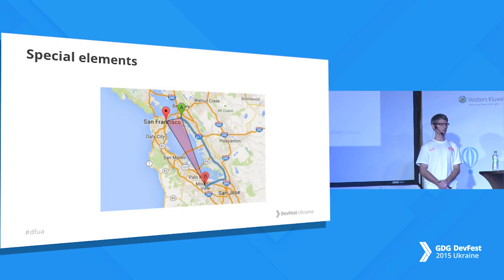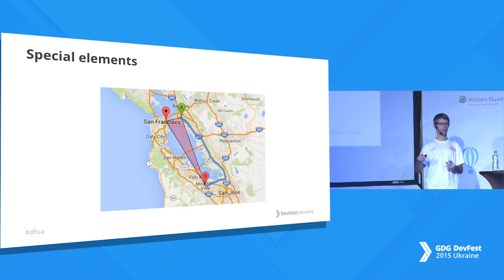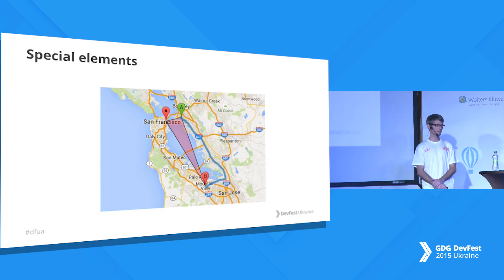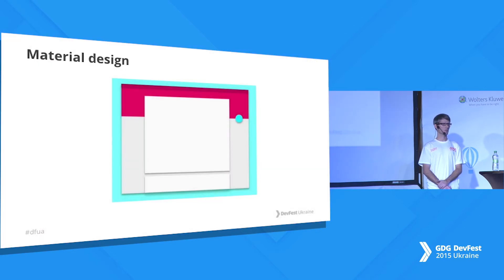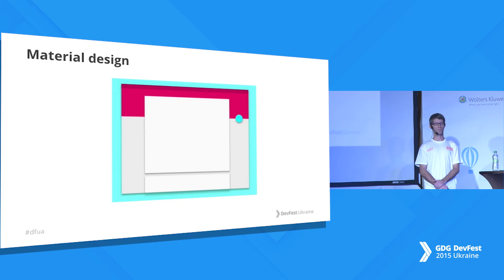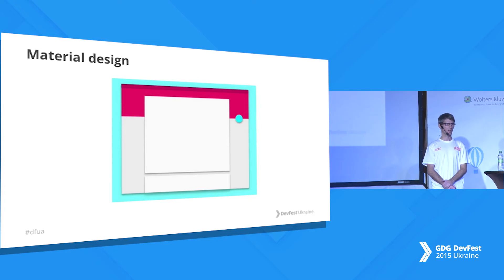This is the Google Map element. You can specify rectangles or a path from one direction to another. You can use the Google Map element and add other elements that will add layers to it. You can also use material design — you know this design from the DevFest web page. It's used by Google products, especially on Android — it's a new way to define elements for mobile or web applications.